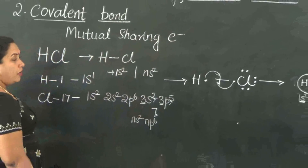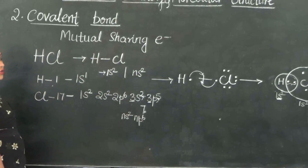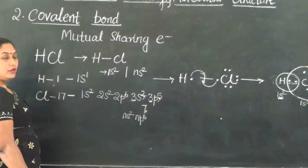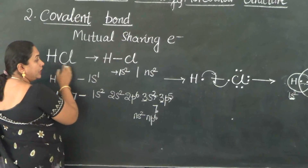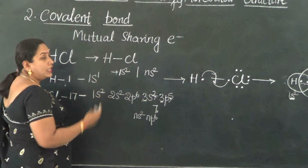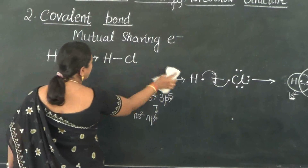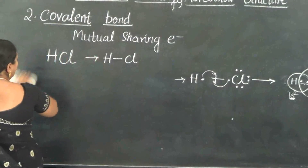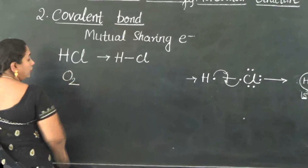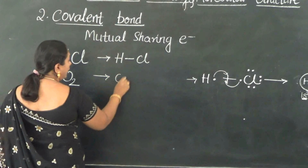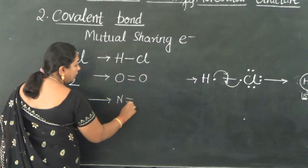So a covalent bond is a bond which is formed by mutual sharing of electrons between the constituent atoms, achieved by donation of electrons by each of the participating atoms. Based on the number of electrons donated, we have different types of covalent bonds. HCl is an example of a single covalent bond. The oxygen molecule is bounded by 2 covalent bonds, and the nitrogen molecule is bounded by 3 covalent bonds.